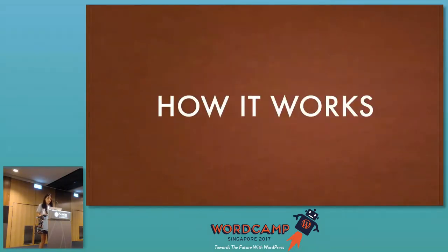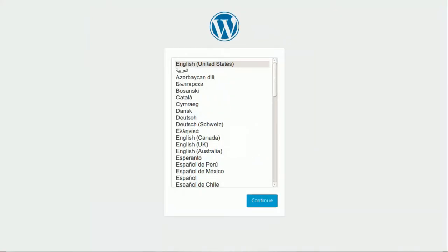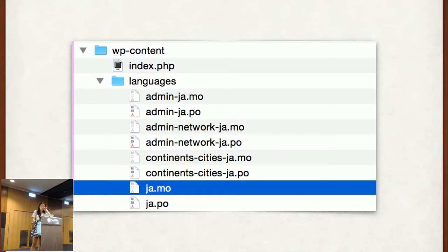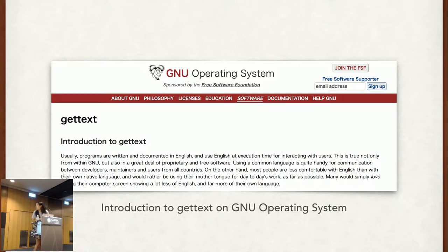So let's start with how it works. Maybe you have seen this screen when you install WordPress. From WordPress 4.0, you can select the language you want to use during the installation process. When you select a language other than English, WordPress will download the language file from the WordPress.org server into the language folder, which is placed in the wp-content directory. WordPress uses the gettext function as its internationalization function. It was not only developed for WordPress — it was created by the GNU operating system.